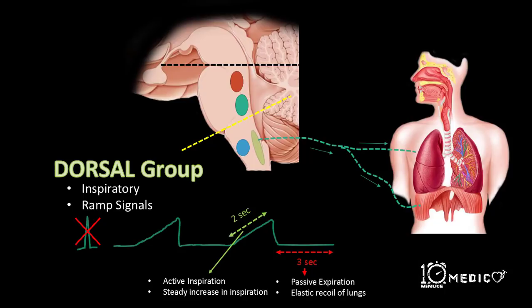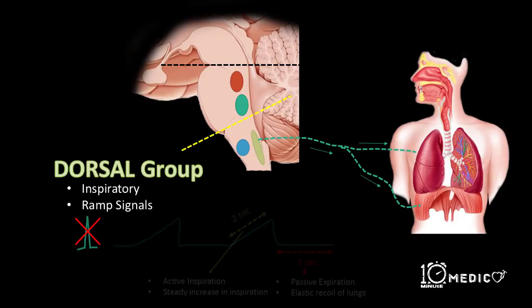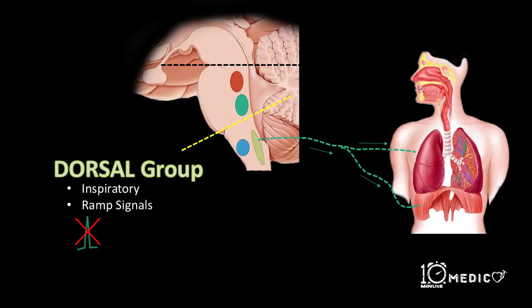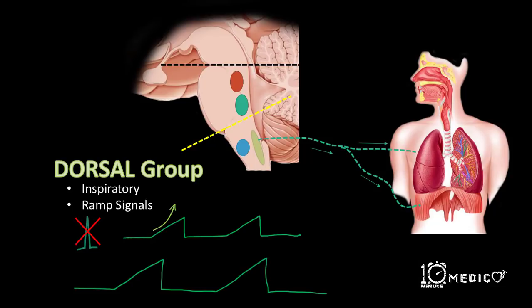During the pause period of 3 seconds, there occurs a passive expiration due to the elastic recoil of the lung. Two characters of the ramp can be changed. The first is the rate of increase of the ramp signal, which results in faster breathing but the depth of inspiration remains the same. The second is the cutoff point — an earlier cutoff leads to faster breathing but the depth of inspiration is very less.